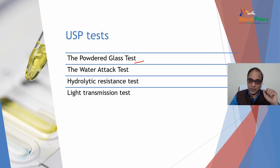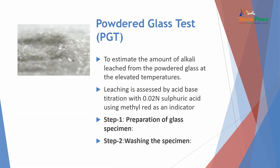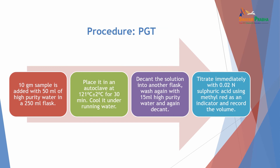Powdered glass test (PGT): used to estimate the amount of alkali leached, using acid-base titration with 0.02N sulfuric acid and methyl red as indicator. Procedure: Step 1 — prepare glass specimen by crushing the container. Step 2 — wash the specimen. Step 3 — take 10g of sample, add 50 ml of high-purity water in a 250 ml flask, place in autoclave at 121 ± 2°C for 30 minutes, cool under running water, decant the solution into another flask, wash again with 15 ml high-purity water and decant again. Titrate immediately with 0.01M sulfuric acid using methyl red as indicator and record the volume. The difference from hydrolytic resistance: sulfuric acid is used here, while hydrochloric acid is used in the hydrolytic resistance test.